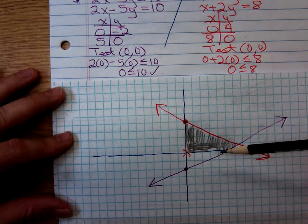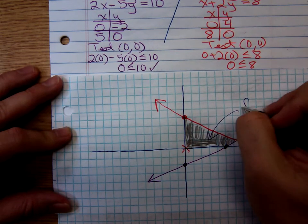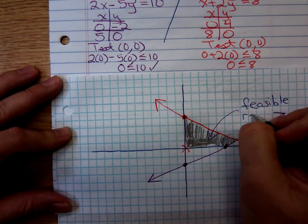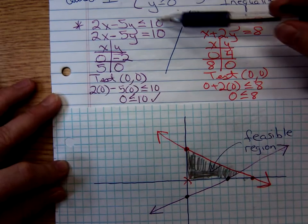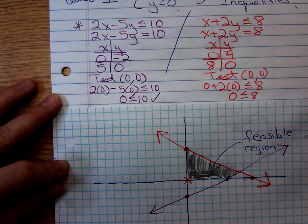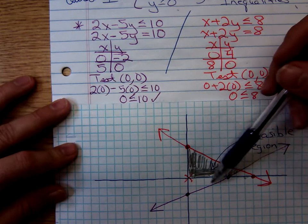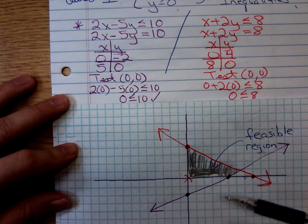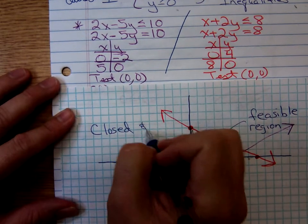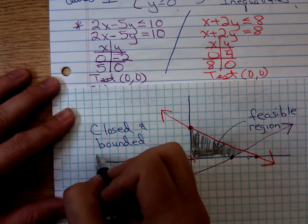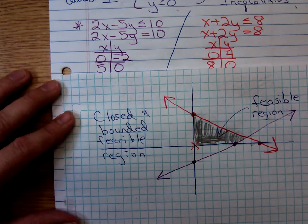The shaded region is referred to as the feasible region. Every ordered pair in that shaded region satisfies my two inequalities as well as my non-negativity constraints. A feasible region in this nature, one that's closed on all sides by solid lines, notice it doesn't keep going forever in any given direction. This thing is said to be closed and bounded. I'll say it's a closed bounded feasible region. Those are the nicest of all feasible regions.